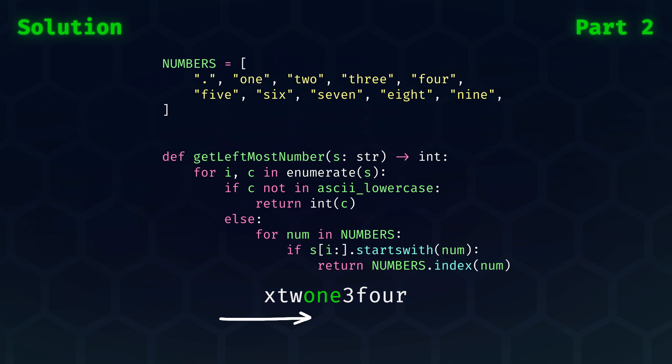Now, for getting the leftmost number, we not only loop over the characters of the string, but we also want to keep track of the index i. First, we can check if the current character is in the alphabet, because if it isn't, then we already have our answer. Suppose, however, that it is, then we need to check if the substring, starting at our current index, is prefixed with any of the spelled-out numbers in the numbers list defined at the top. If we actually find such a prefix, then we can benefit from the index method to return our digit as an integer.